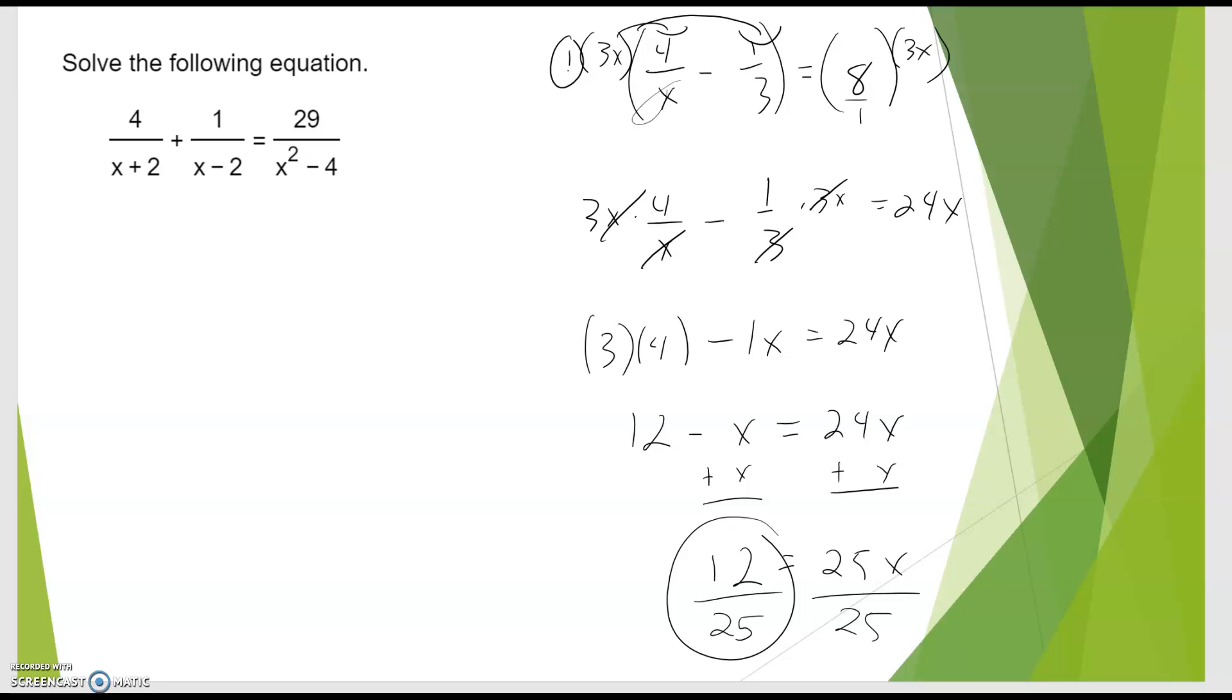We'll talk more about domain next week. So in general, if you can factor, you want to factor. And then you can see there's an x plus 2 shows up here. x minus 2 shows up here. And this has the product of the 2, which makes my LCD that guy, right? Because this will obviously go into itself. And then over here, x plus 2, of course, will go into x plus 2 times something else. And x minus 2, of course, will go into x minus 2 times something else.